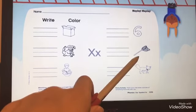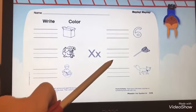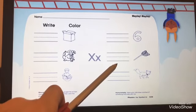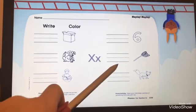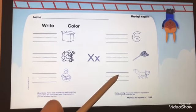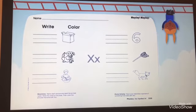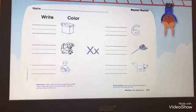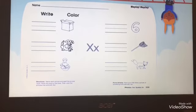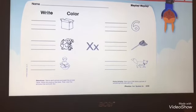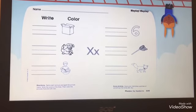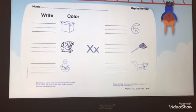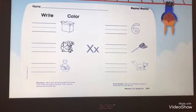Now look here, what is this? It's a net. Net. Now start writing with me please: N, E, T. Net. Very good. Now what is this? It's a fox. Yes, it's a fox, very good! Now I want you to start to write with me: fox. Fox. Very good.